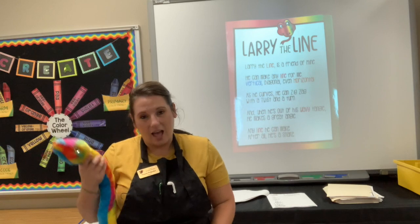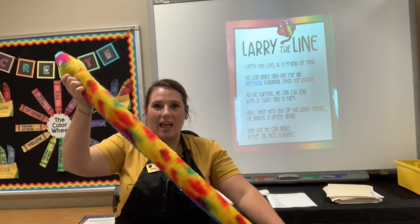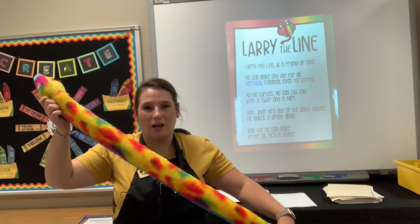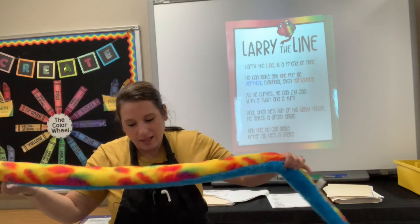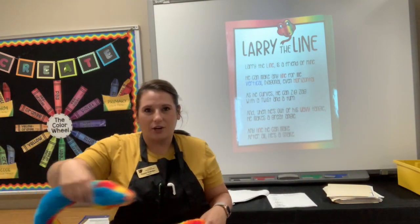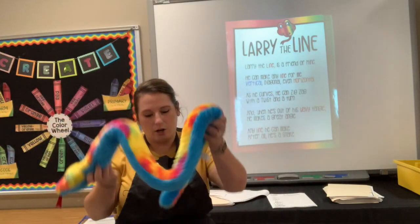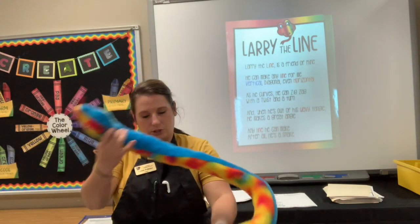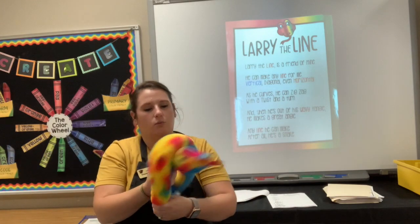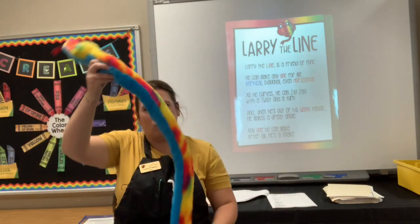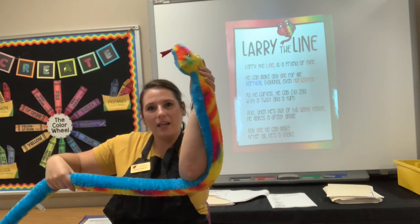He can make a vertical line, a diagonal line, and a horizontal line. He can make any line for me. As he curves, he can zigzag, and with a twist and a turn, and when he's out of his wavy tangle, he makes a nice angle.